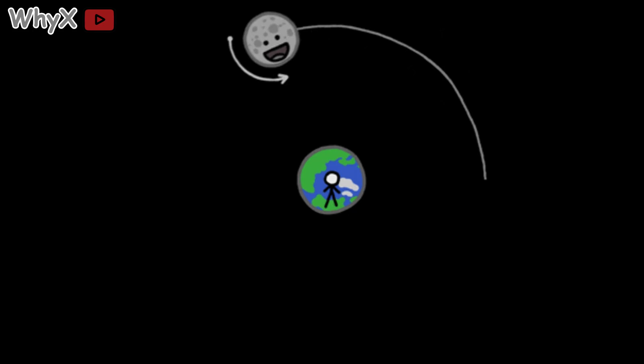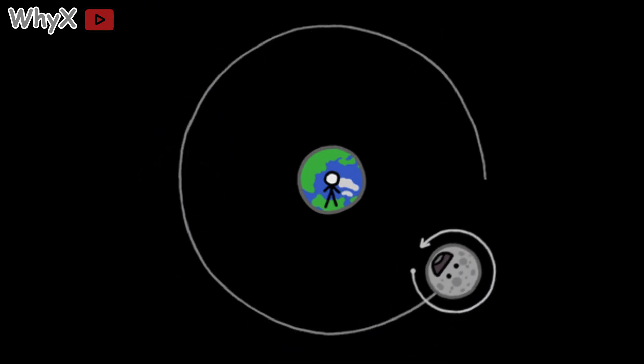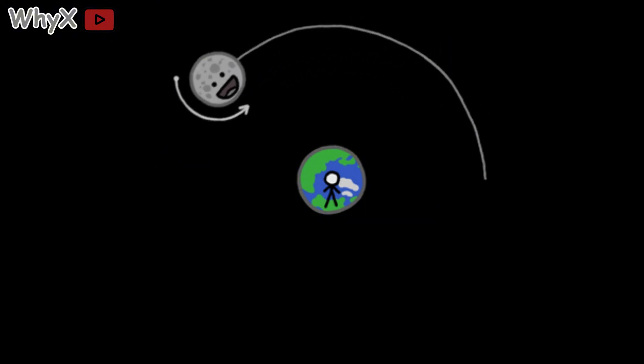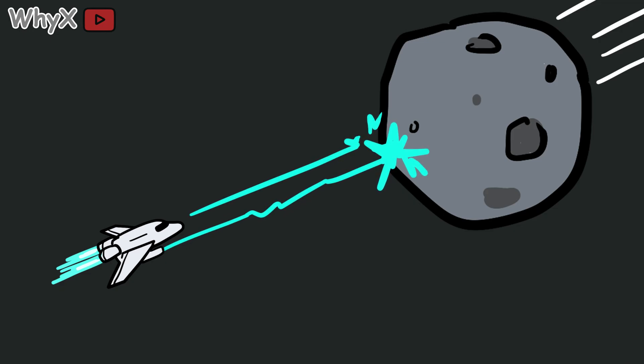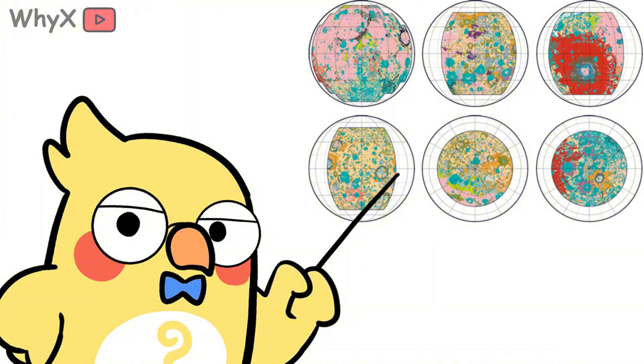Its gravity locks our planet's axial tilt into a relatively narrow range, damping wild wobbles that would have sent climate careening between desert planet and snowball. Remove the moon and you don't just dim the evenings, you make the seasons feral. Keep the moon and you buy geologic time: the long, slow steadiness in which biology can try ideas, fail, and try better ones.